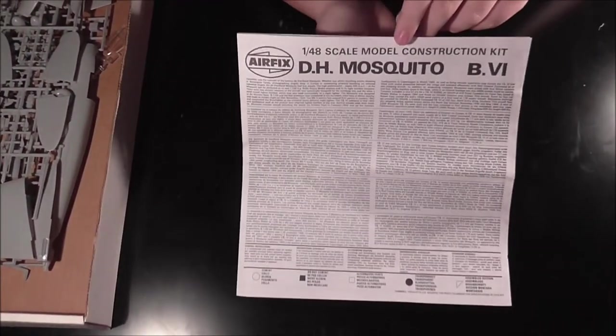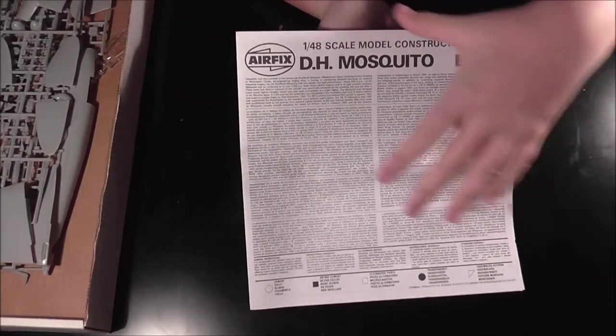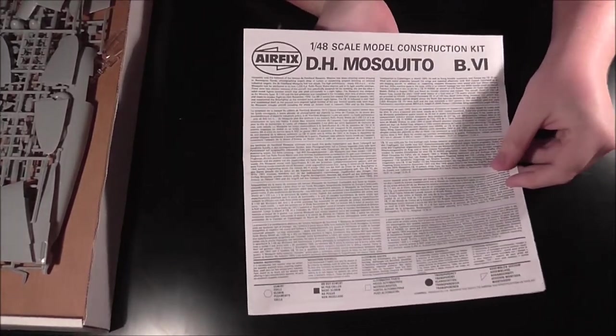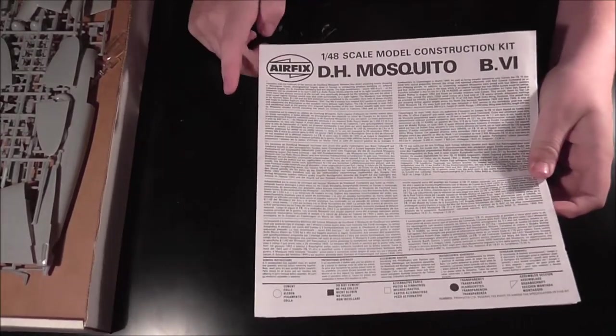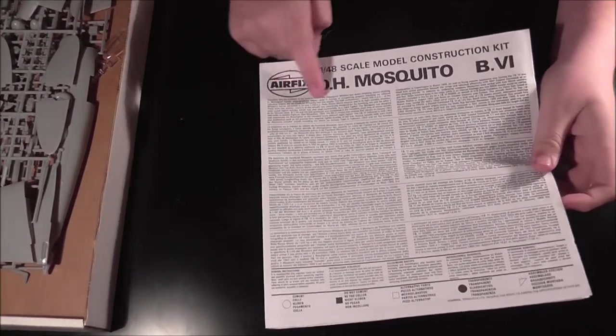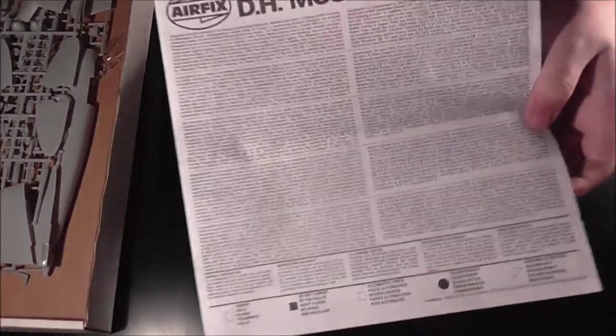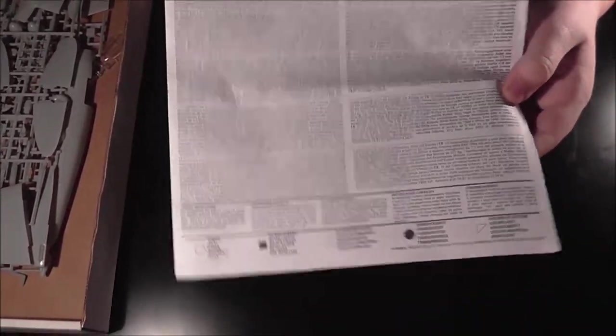Let's have a look at the instructions. It's a bit different to what you usually see with kits these days. It's a square piece of paper rather than a booklet or whatever. Obviously, all the bits there. All the stuff you need to know about the Mosquito, and the different languages as always, and the codes for the stuff you might see in the instructions.